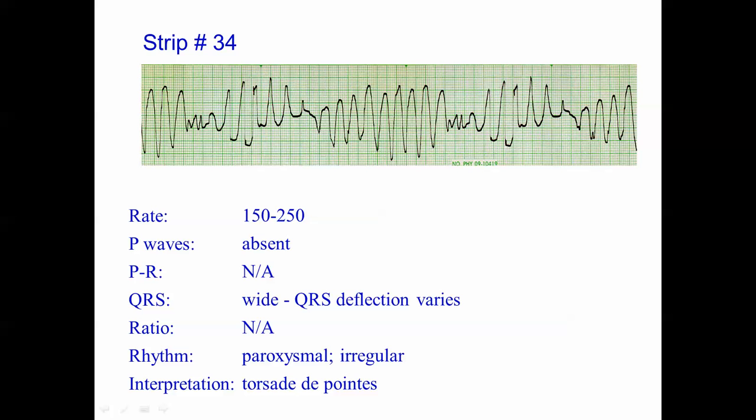Torsade accounts for fewer than five percent of sudden cardiac deaths. To me, if it's under five percent, that's still a significant number. You'll see torsade in almost any age category from newborn to elderly, but it most commonly occurs in adults between the ages of 35 and 50 years of age.